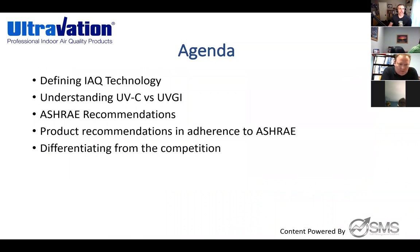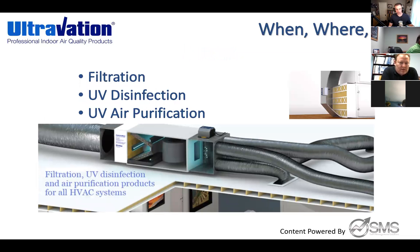Here's the agenda. We're going to clearly define IAQ technology. There's an important understanding between UVC lamp technology and UVGI technology — these terms are being thrown around. We're making sure this is directly aligned with the ASHRAE recommendations, specifically Chapter 62 of the ASHRAE handbook. And we're going to focus on the products you brought in, the recommendations that align with ASHRAE, and then differentiate some things from the competition. Biggest question for sales or contractors: when, where, why?